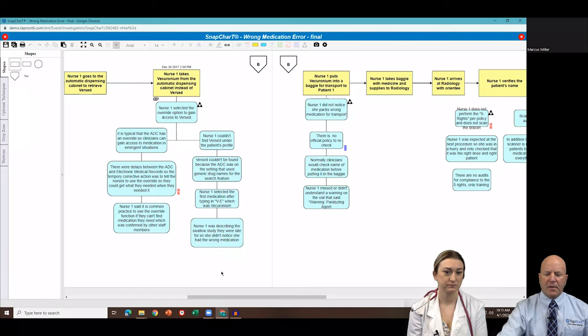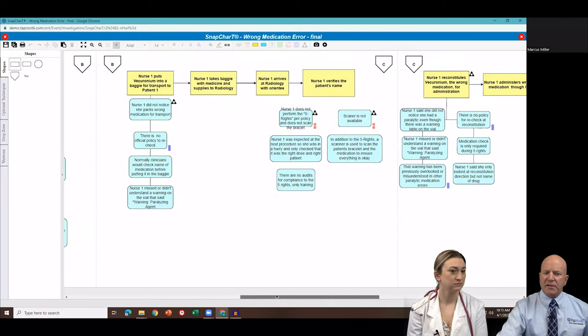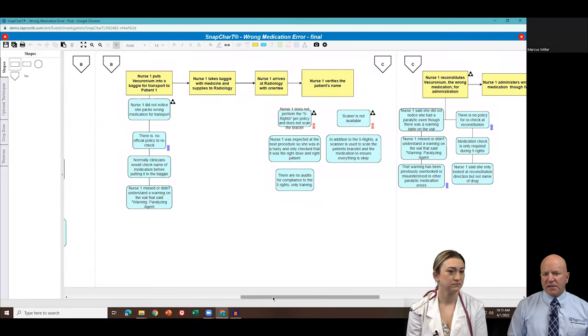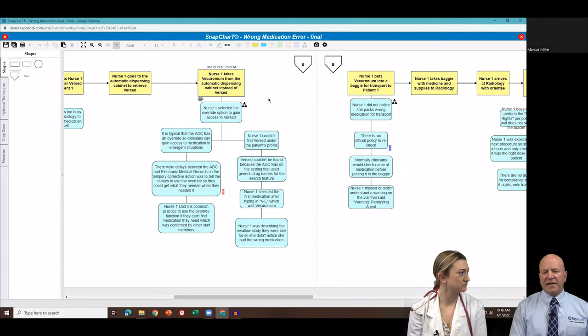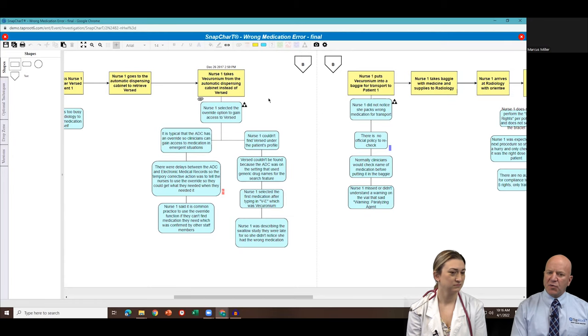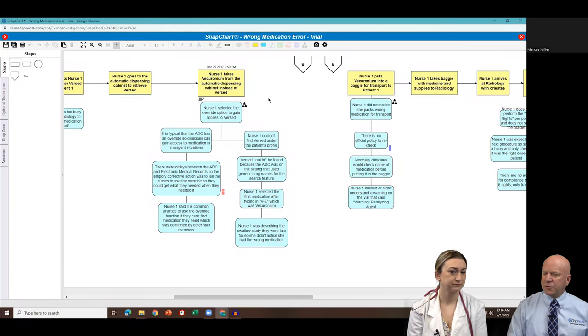So that's why she put in VE. That's why Vecuronium popped up and that's how she got it into her hand. And she also had an orientee with her that day. She was talking about a swallow study. So as she's interacting with her orientee, she puts in the VE. She pulls out the medication. She thinks she has Versed in her hand, not Vecuronium. These little triangles here, these are the mistakes that were made, right? Maybe it's not a mistake because she was supposed to use the override, but this is an opportunity for us to really look into this and find out, let's take this mistake through root cause analysis so we can find the root cause. Let's not just blame her for hitting the override, right? Like she was in the trial, she was blamed for it.